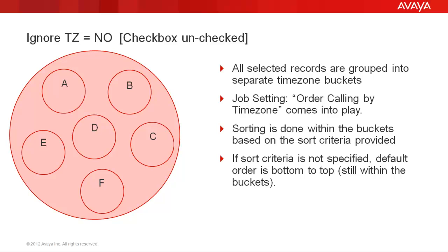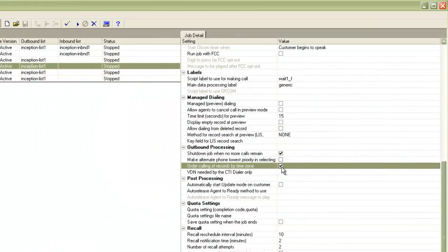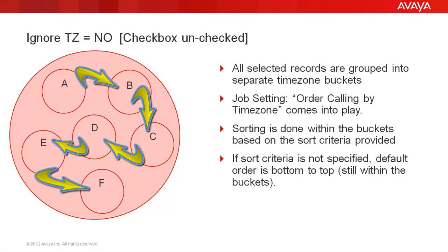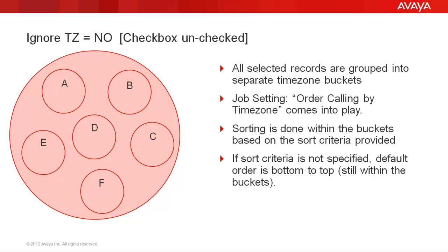When all the records of this timezone have been called out, it will move on to the next timezone whose guard times open up next, and so on. Now, if you uncheck the order-by-timezone checkbox in your job, the system follows a round-robin method. It starts from the timezone which opens up first and picks up one record from each timezone bucket in a round-robin fashion — one record from A, then from B, then C, and so on, then back to A, then B, and so on. If sort was specified, records are sorted within the buckets; if no sort was specified, bottom-to-top within that bucket is followed.